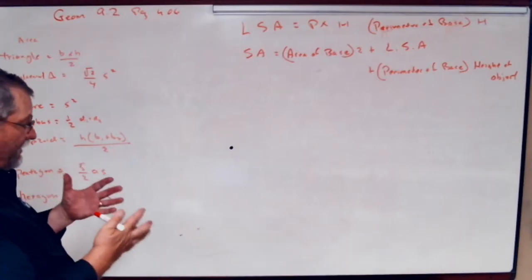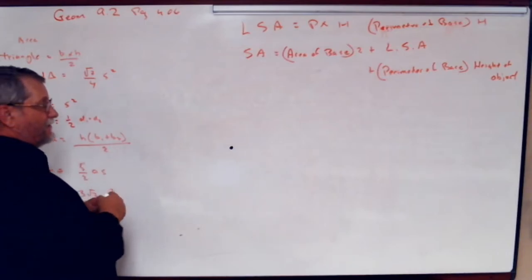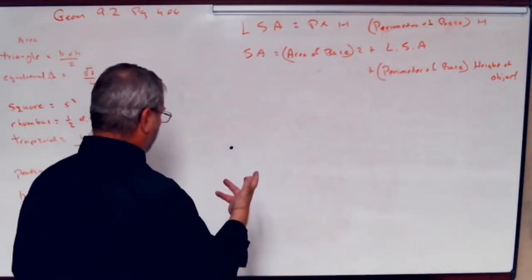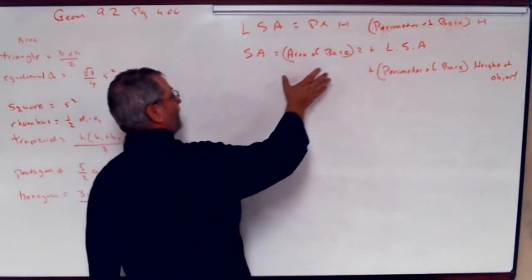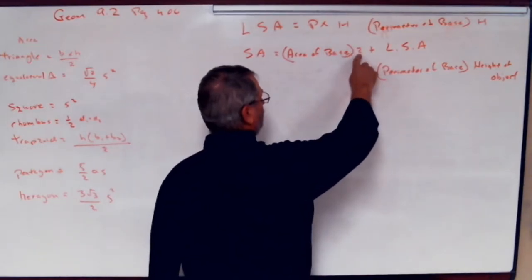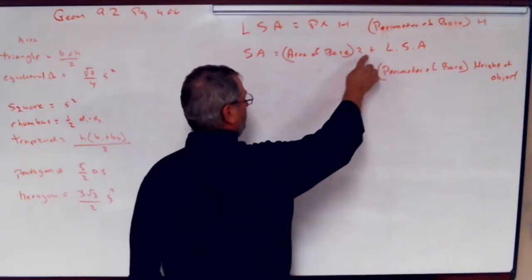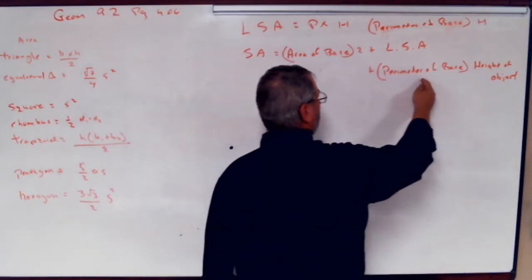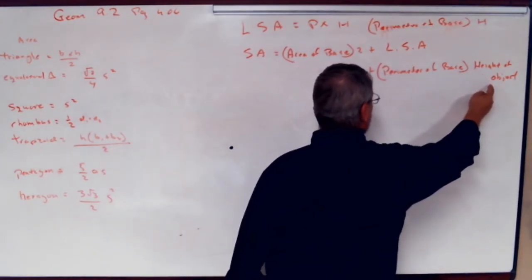Surface area of an object. This is a good formula to have. Surface area of any kind of three-dimensional object. Surface area is the area of the base times two, set that aside, plus the lateral surface area. That means the perimeter of the base times the height of the object.